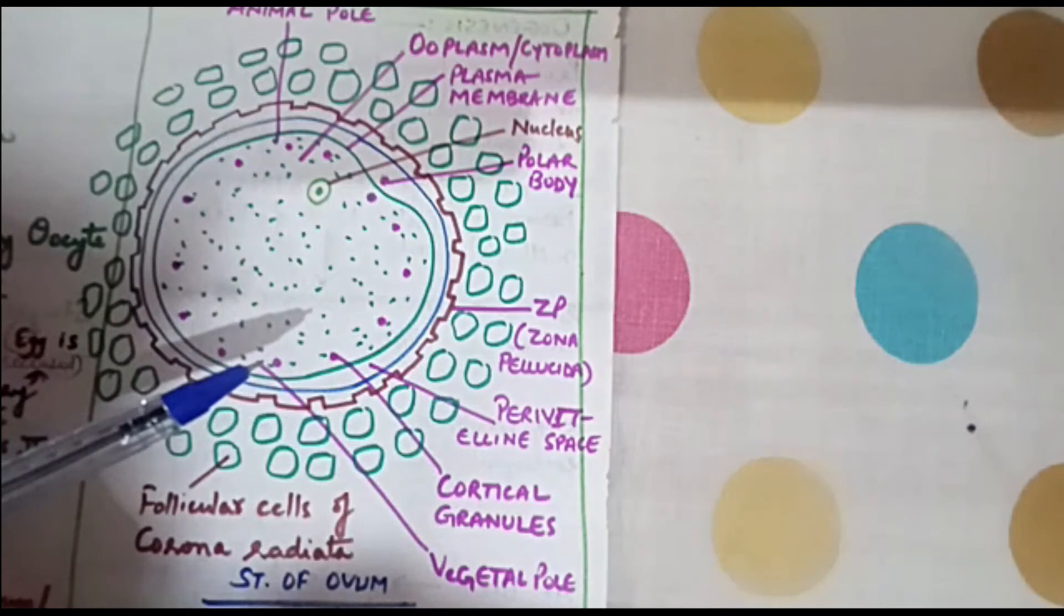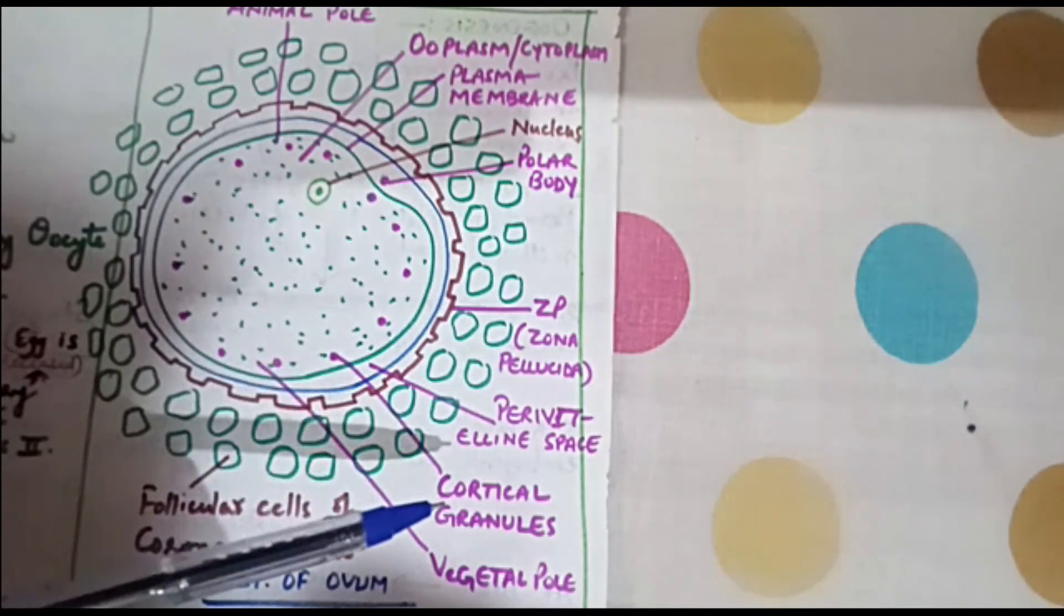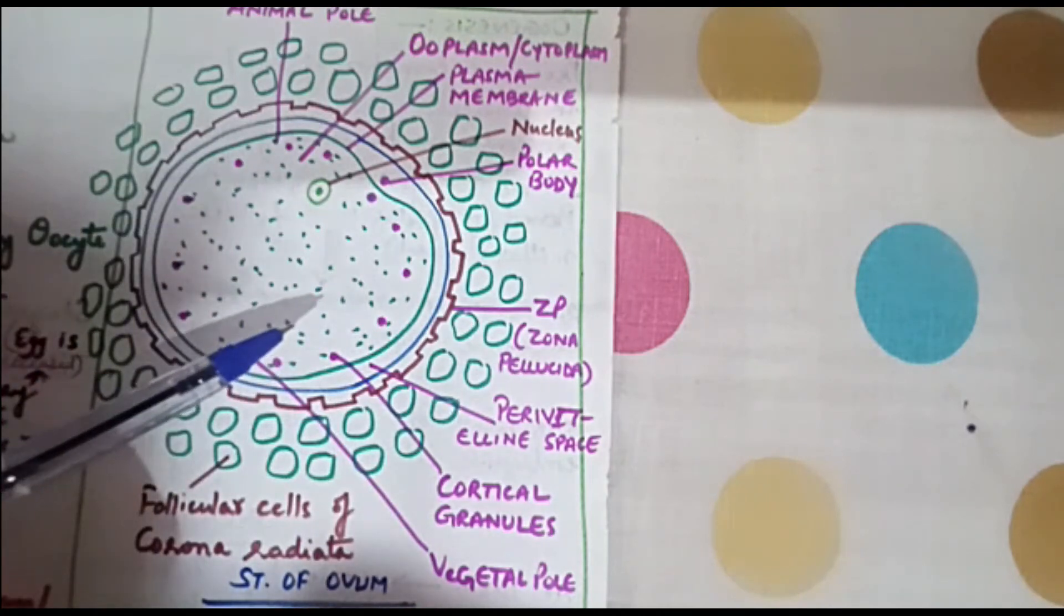Further, there are a large number of structures which are known by the name of cortical granules in the cytoplasm of the egg.